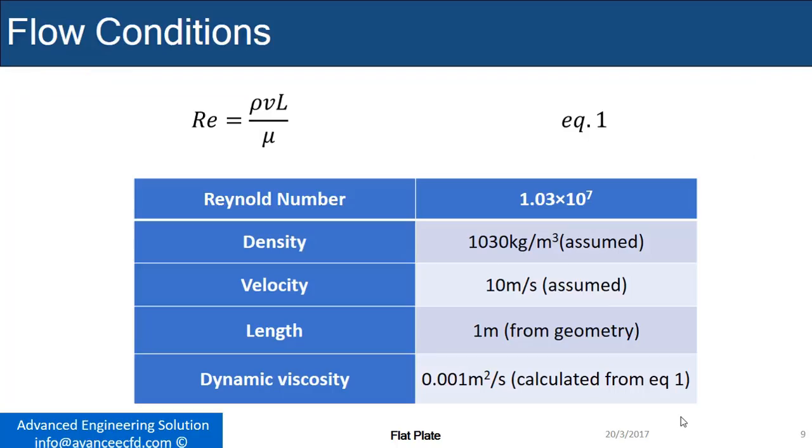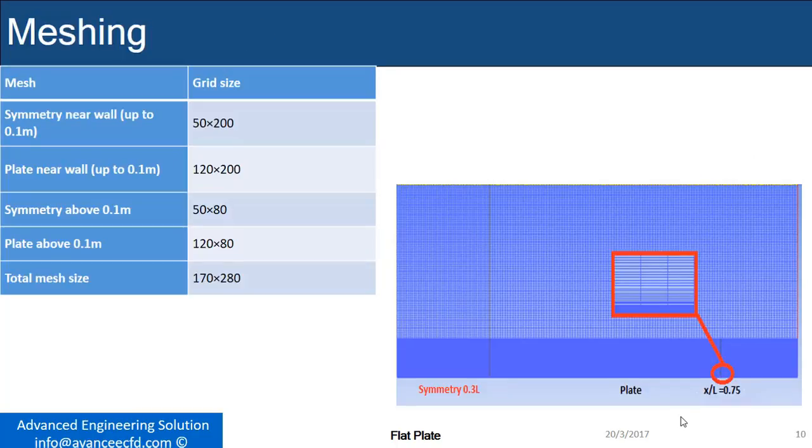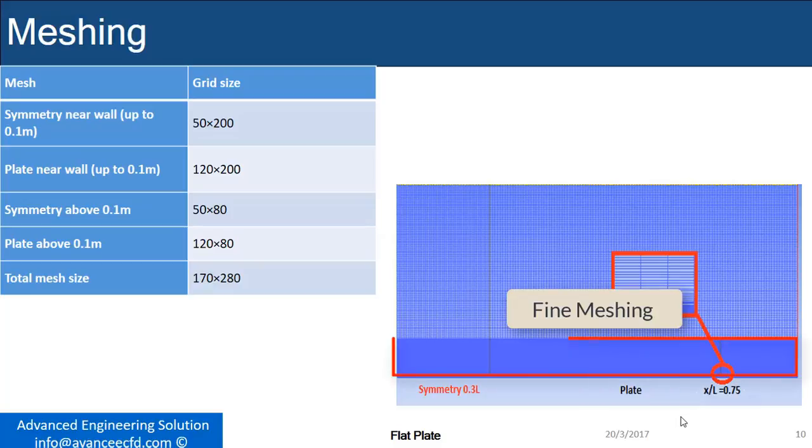A 2D geometry with specified flow conditions and meshing scheme was used. Fine meshing is done near the wall because the viscous sublayer and buffer layer are very small and close to the wall, so fine meshing is required to observe these layers.